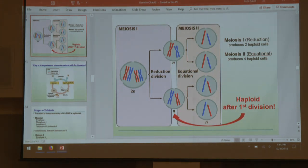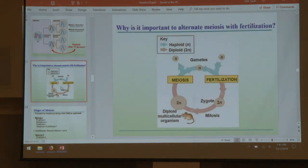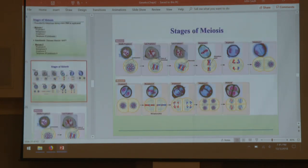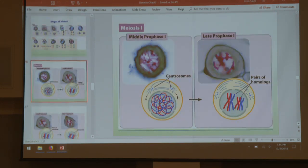These gametes could be sperm or eggs — it's the same thing. Meiosis I and meiosis II both still use PMAT-C for each round. You can look through the stages — they're exactly the same; we just alternate from splitting homologous pairs to splitting sister chromatids.